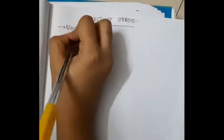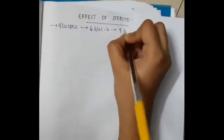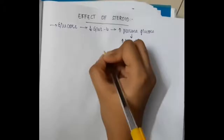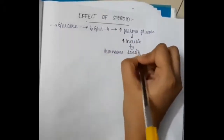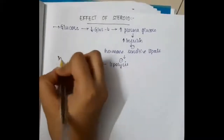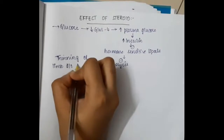Regarding the effects of steroids on glucose: steroids decrease GLUT-4 receptors, which increases plasma glucose levels. Because of increased plasma glucose, there is increased insulin production.